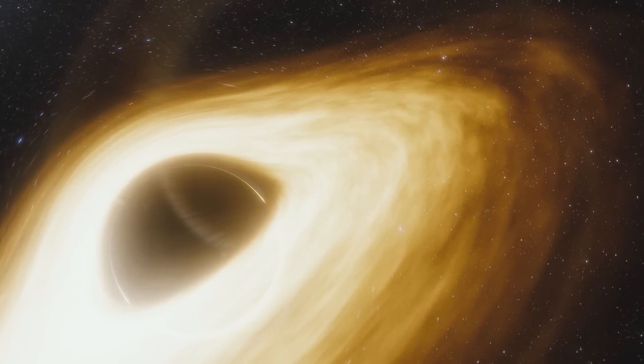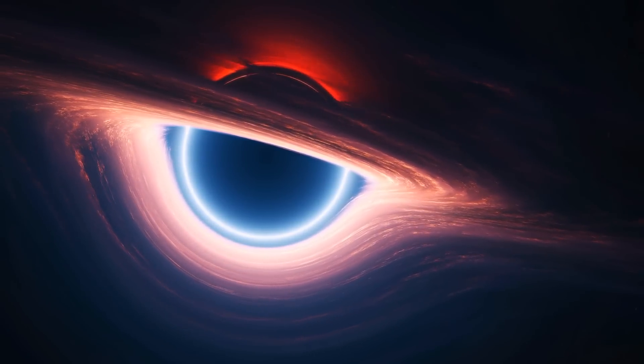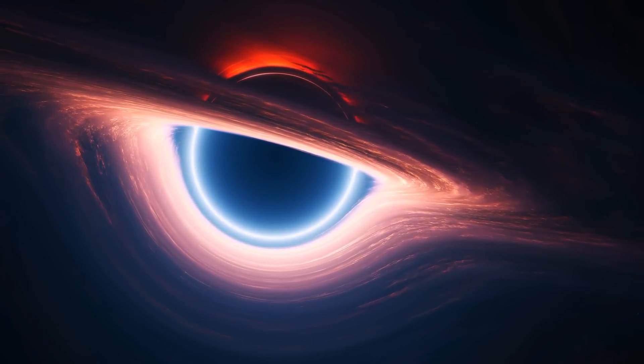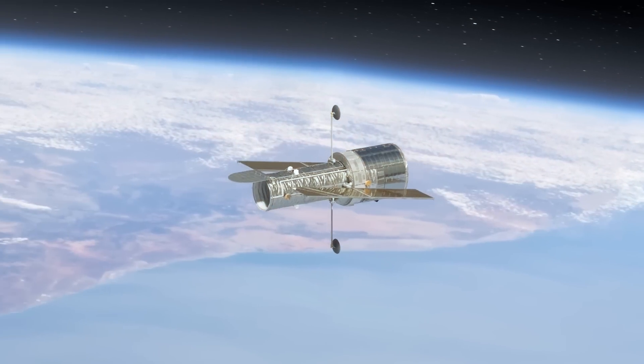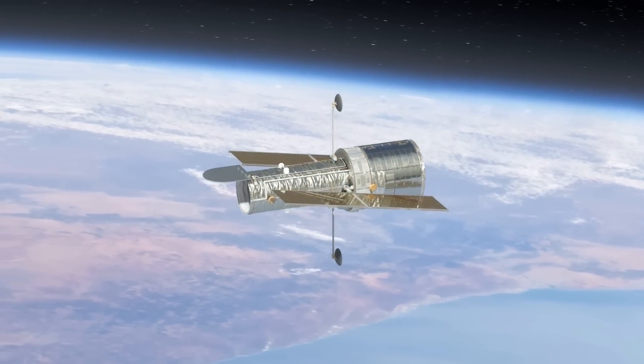Black holes, for example, already existed in the mathematical equations of the general theory of relativity before any astronomer had ever seen a real black hole. This assumption was later confirmed, and similar examples abound in astronomy and other branches of science.